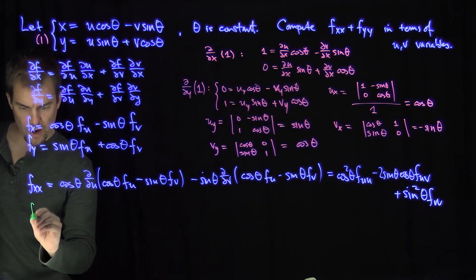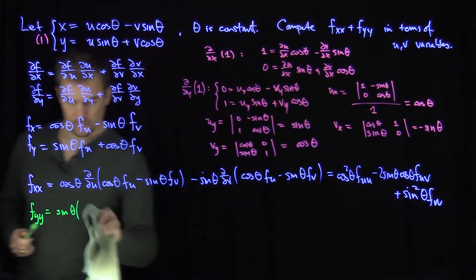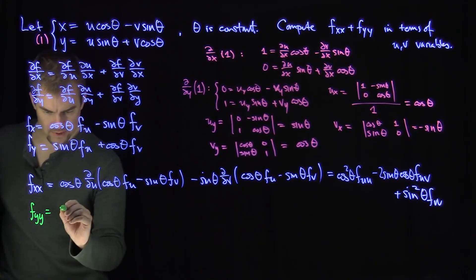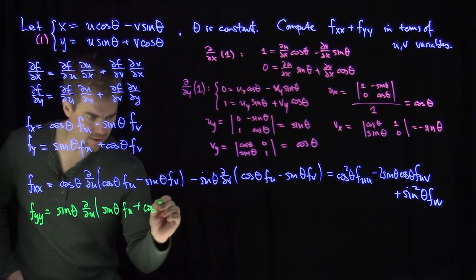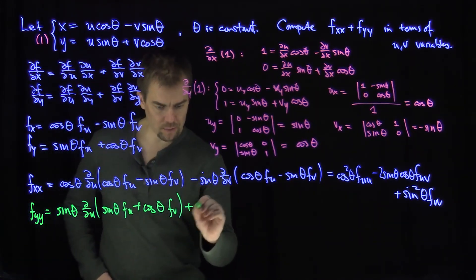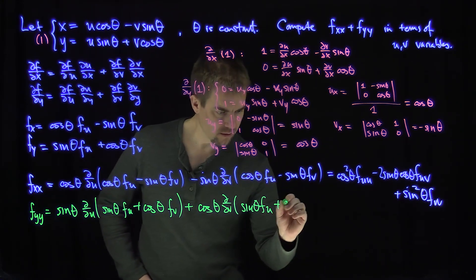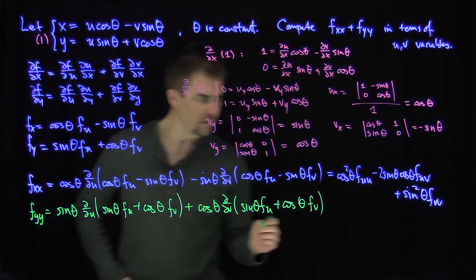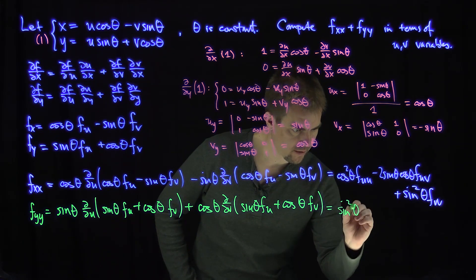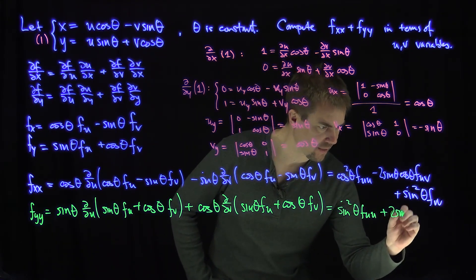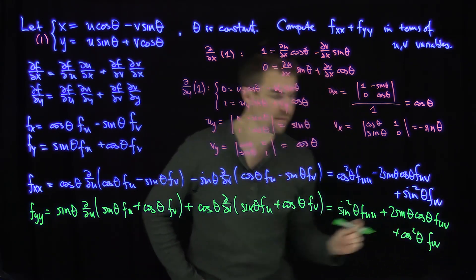For fyy, we apply sinθ times a u-derivative plus cosθ times a v-derivative to fy. Expanding gives: sin²θ · fuu + 2sinθ cosθ · fuv + cos²θ · fvv.